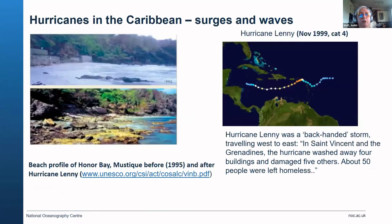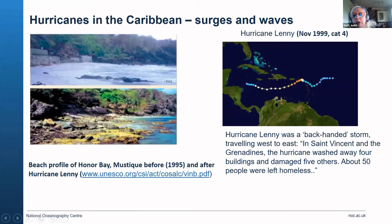This is showing a beach in Mustique before and after Hurricane Lenny. Hurricane Lenny was a very interesting storm that happened in November 1999 — category four — but it was a backhanded storm because it actually formed in the western Caribbean and traveled eastwards, which is very unusual. It was then able to attack many islands from behind, from the leeward side, which is their less normally impacted coastline.